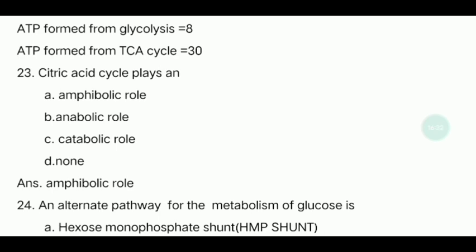Twenty-third question: What role does the citric acid cycle play? It plays both an anabolic role, building up molecules, and a catabolic role, breaking down molecules. Because it serves both roles, it is called an amphibolic pathway.